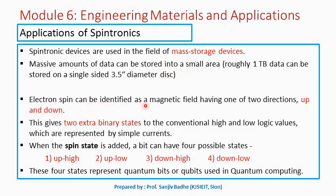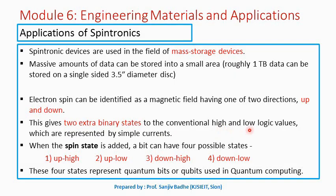Electron spin can be identified as a magnetic field having one of two directions, either up or down. This gives two extra binary states in addition to the conventional high and low logic values, which are represented by simple currents. So with the help of only currents, we can have only two binary states: high and low.